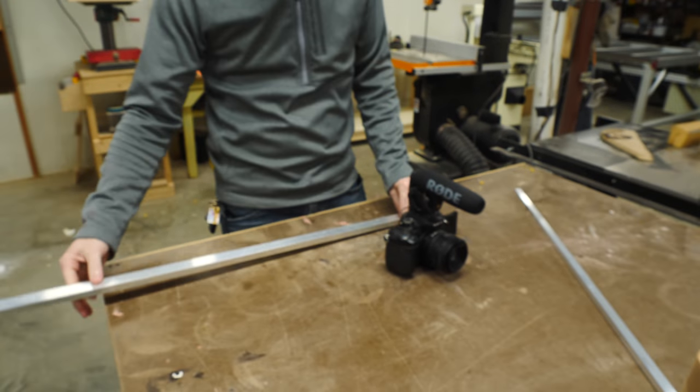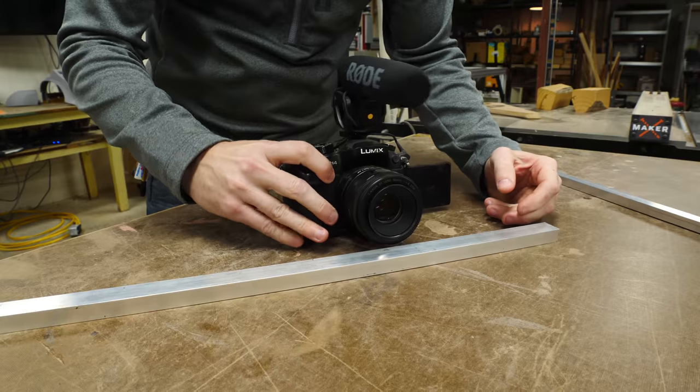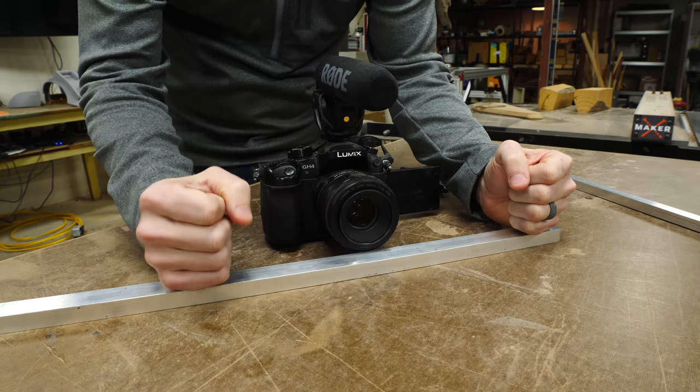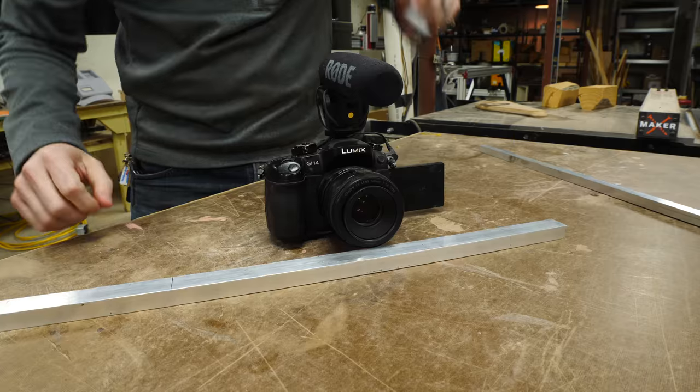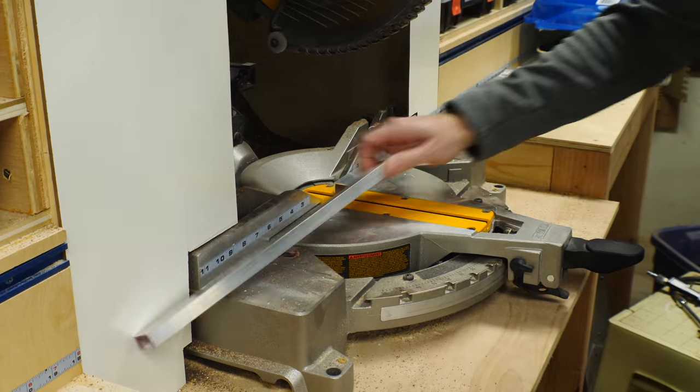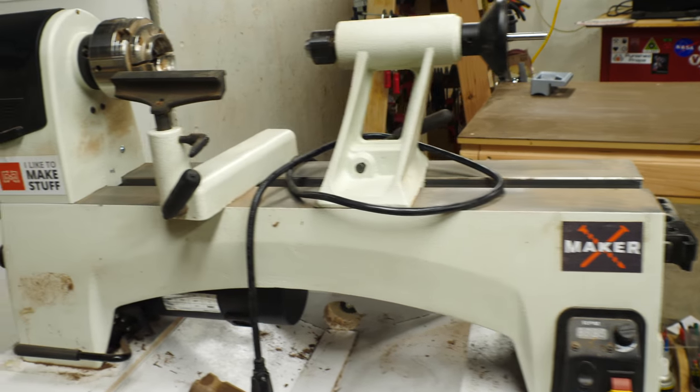I started out with a piece of aluminum channel that I already had from the home center. I laid out my camera on it to figure out how long it needed to be to account for the camera and both of my hands. Aluminum can be cut on most woodworking tools, so I just chopped it down to length.